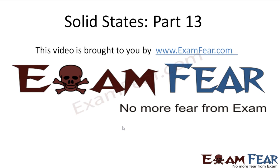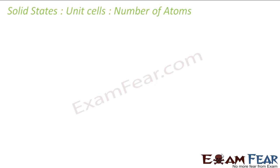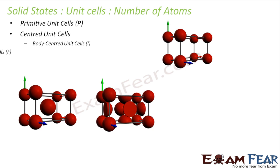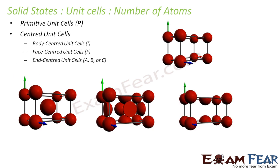Hello friends. This video on solid states part 13 is brought to you by examfier.com. Now we will talk about the number of atoms in unit cells. We have seen that primitive unit cells are the ones which have atoms only in the corners. We will discuss the number of atoms for primitive unit cells, centered unit cells — and centered we have three types — we will discuss the number of atoms for all these things.